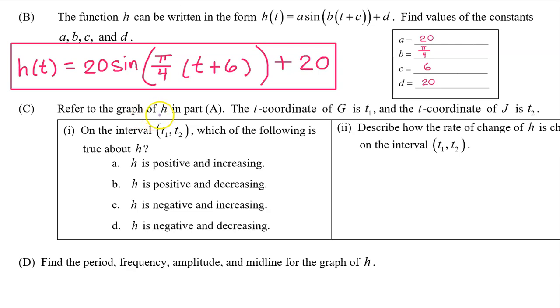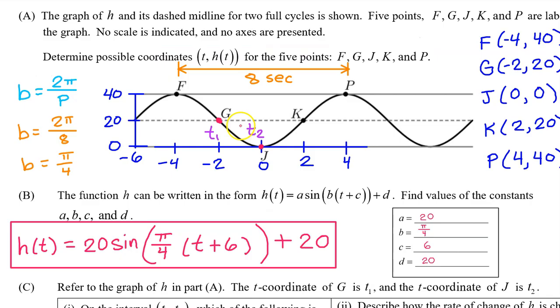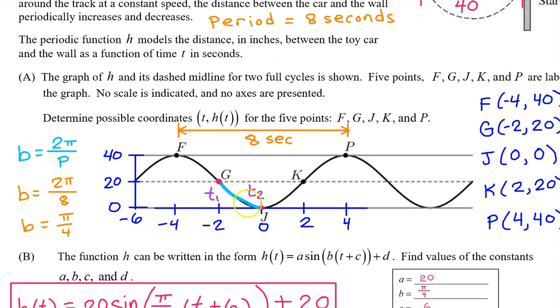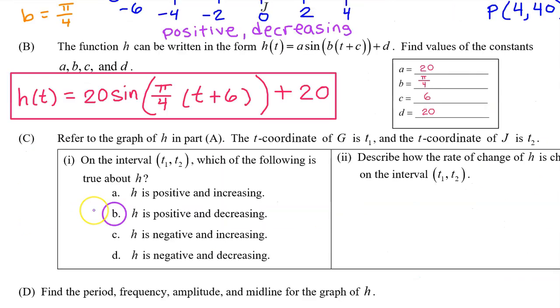Part c. Refer to the graph of h in part a. The t coordinate of g is t1 and the t coordinate of j is t2. We're talking about the input coordinates of point g and point j. So, t1 is negative 2 and t2 is 0. Part 1. On the interval from t1 to t2, which of the following is true about h? Is h positive and increasing, positive and decreasing, negative and increasing, or negative and decreasing? On the interval from t1 to t2, the output values are all between 0 and 20. These are all positive values. Also, notice that the output values are falling from left to right on this interval. So, h of x is positive and decreasing on the interval from t1 to t2. And the answer is b.